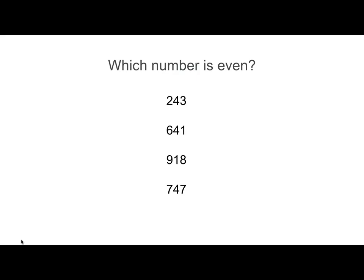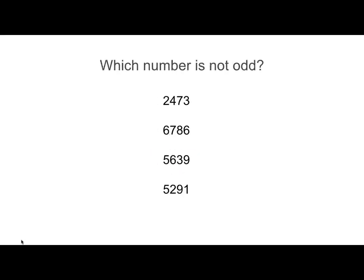Which number is even? Looking at the ones digit, you can see the eight is even. So nine hundred and eighteen is even. Which number is not odd? If it's not odd, it is even. So looking at the ones digit — three, six, nine and one — you can see that the number six thousand seven hundred and eighty six is even.